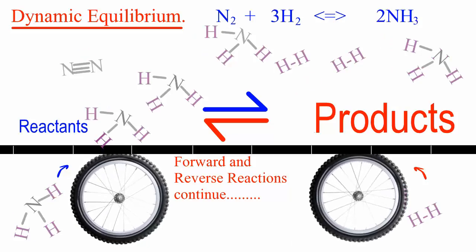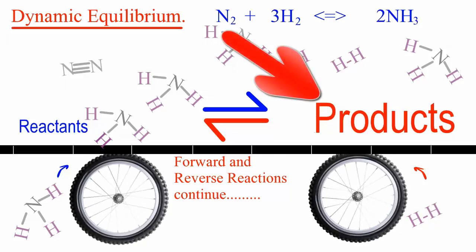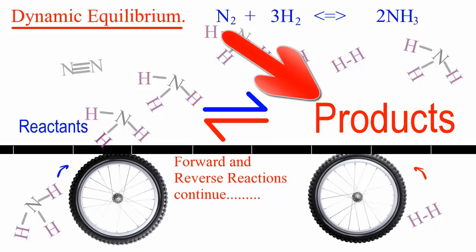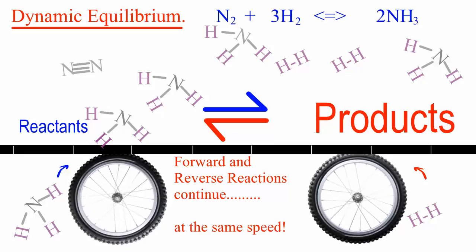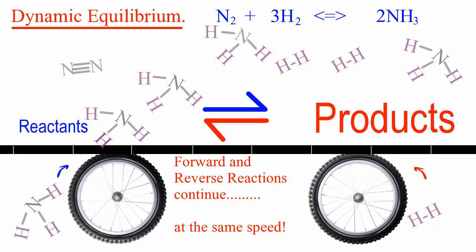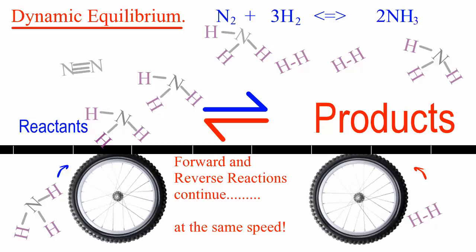I'm inferring in this analogy that the equilibrium lies far to the right by the fact that products is printed in larger print. In the Haber process, they use conditions like 400 degrees Celsius and 200 atmospheres pressure, where one has about a 20% yield of products. So it would be the other way around—the equilibrium would lie far to the left-hand side.